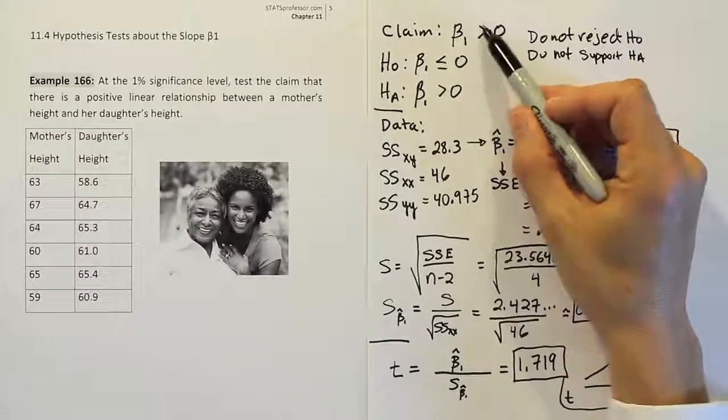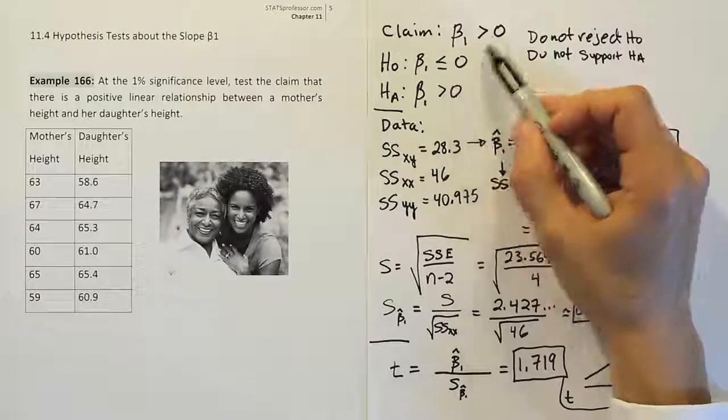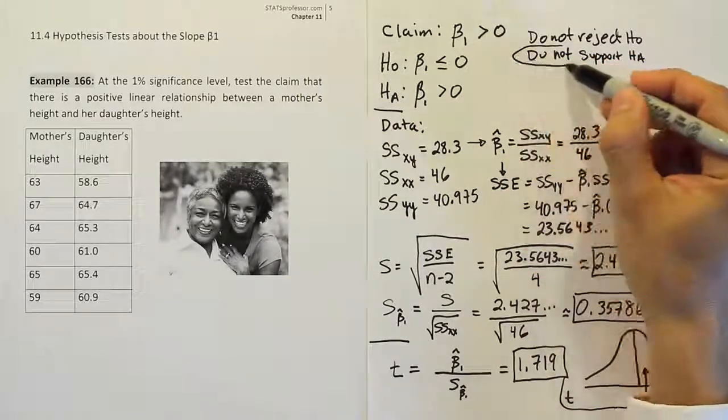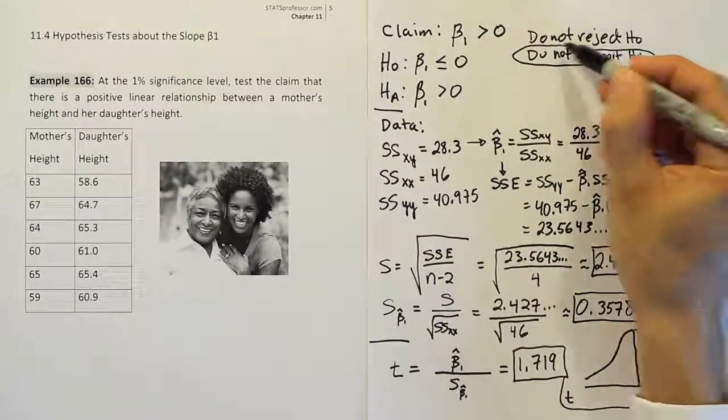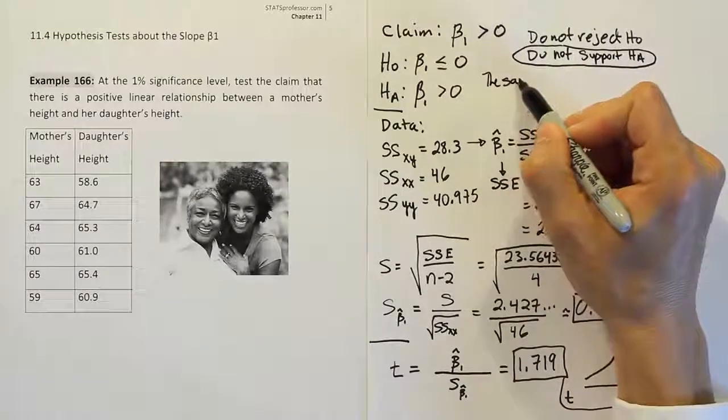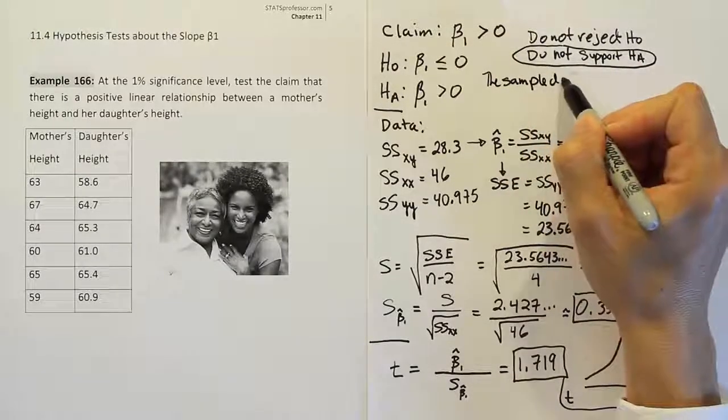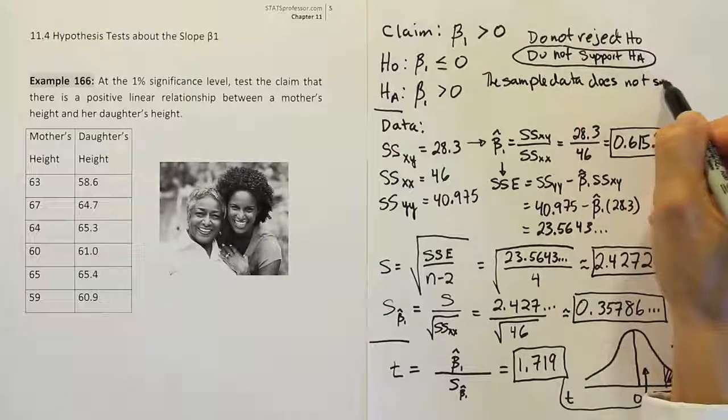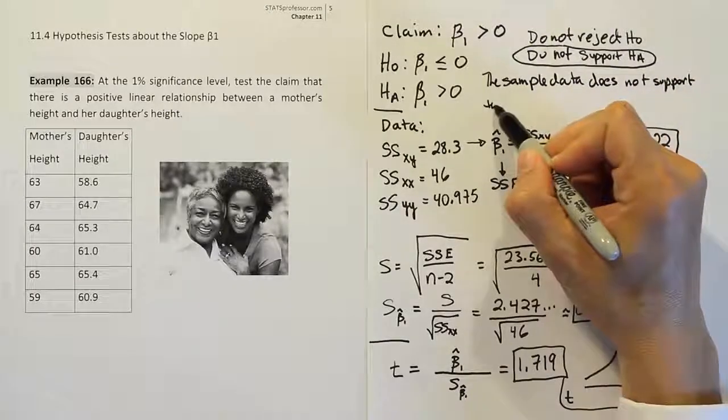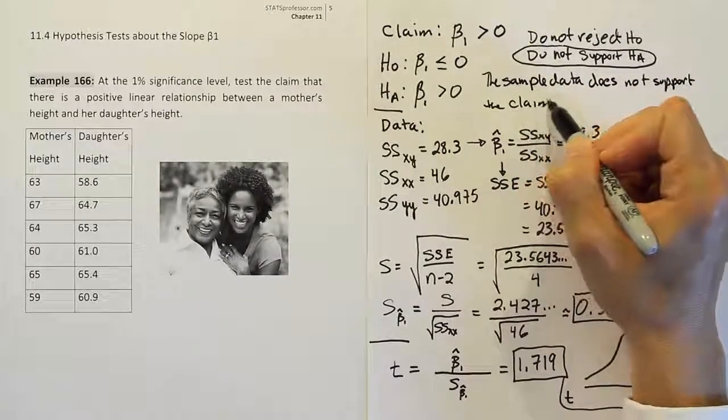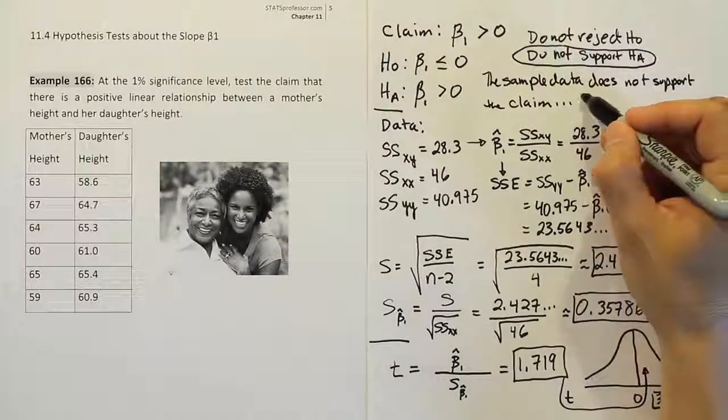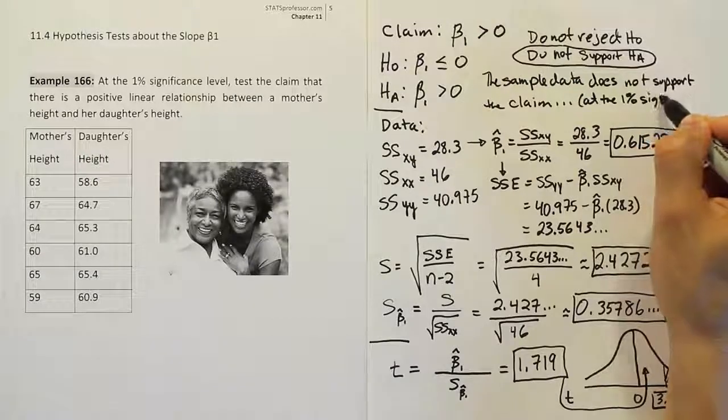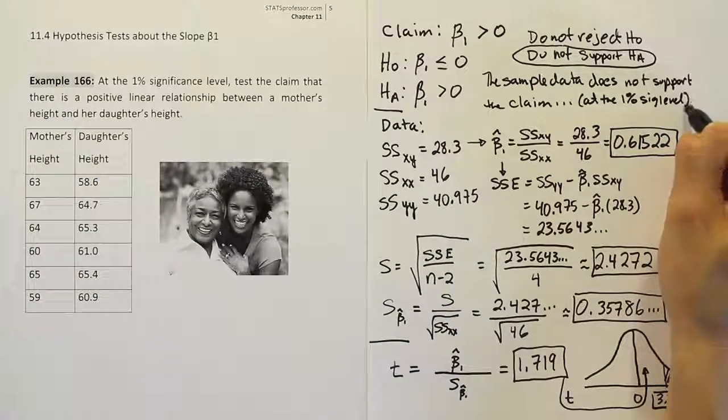Do not support HA. And now looking at our claim, which one is our claim closest to? Is it H₀ or HA? And we could say, well, clearly the claim is the same as HA in this problem. So we're going to go ahead and use this wording. Let's say the sample data does not support the claim. The sample data does not support the claim. So the sample data does not support the claim. The claim. And what does that mean here? Well, you know, by the way, we should say at the end here at the 1% significance level, right?